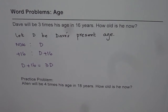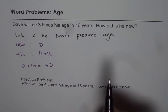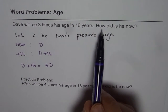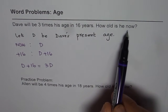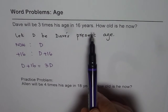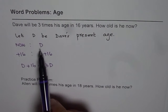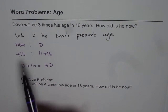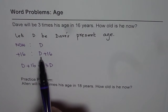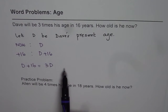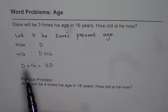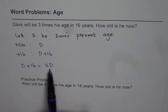So that is how we can get a relation from the first statement. Normally, we define a variable with the help of what is being asked for, and then the initial statements will give us the equation. So in this case, present age is D, after 16 years it will be D plus 16, and the relation between them is 3 times. So D plus 16 equals 3D. Now we have an equation to solve.